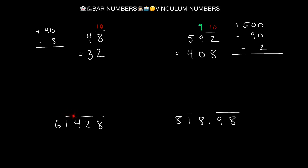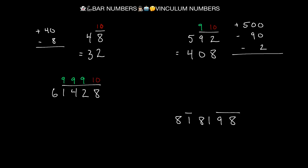Here's another one with a longer string of bar numbers. To apply 'all from 9, last from 10,' we subtract 1 from the first non-bar digit, which is 6. So 6 minus 1 gives us 5. Then 9 minus 1 is 8, 9 minus 4 is 5, 9 minus 2 is 7, and 10 minus 8 equals 2. So removing the bar numbers, this is what we get.